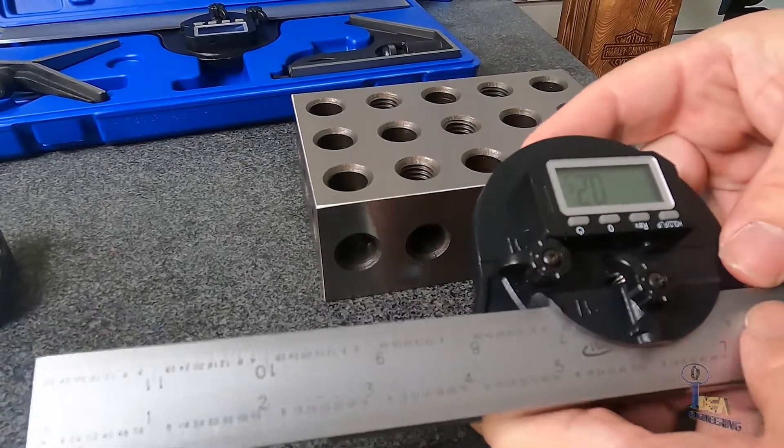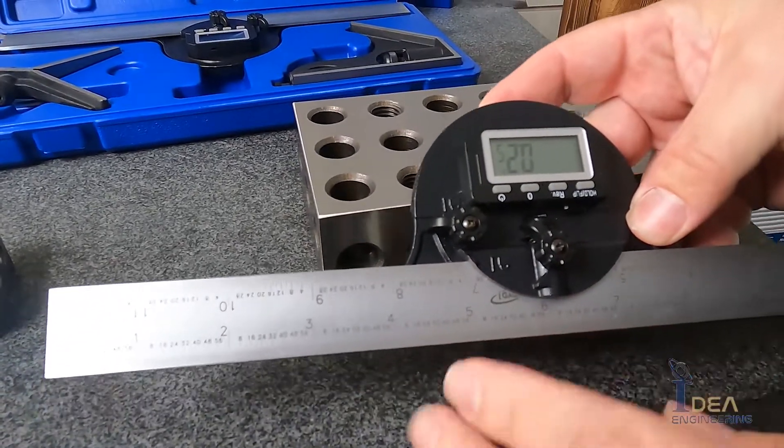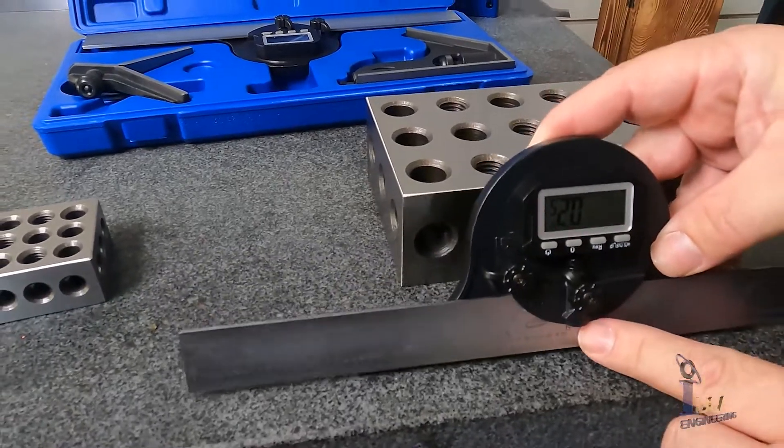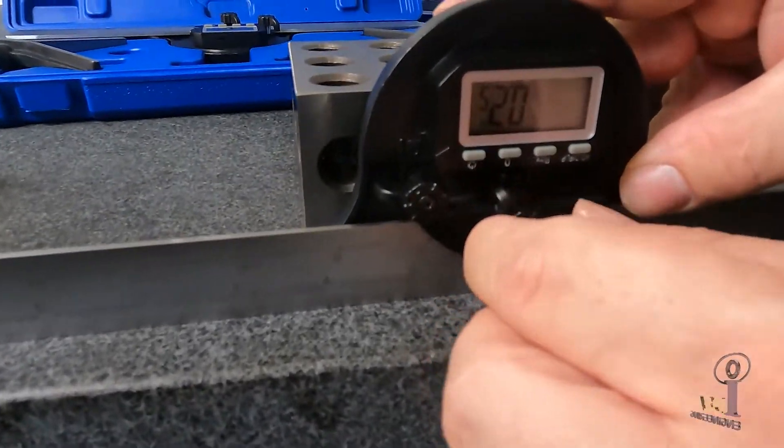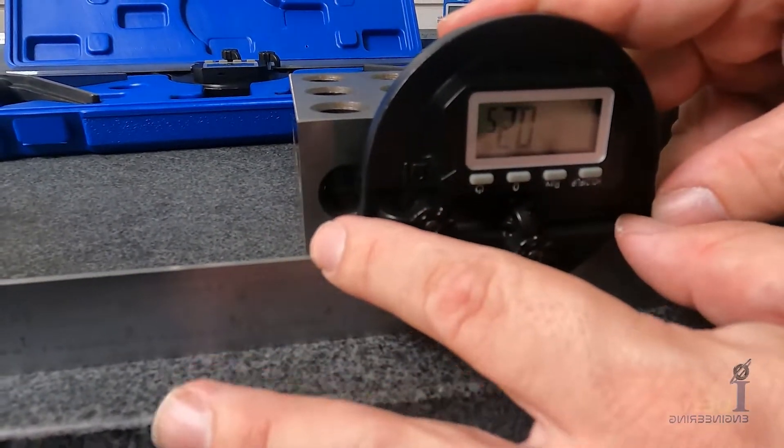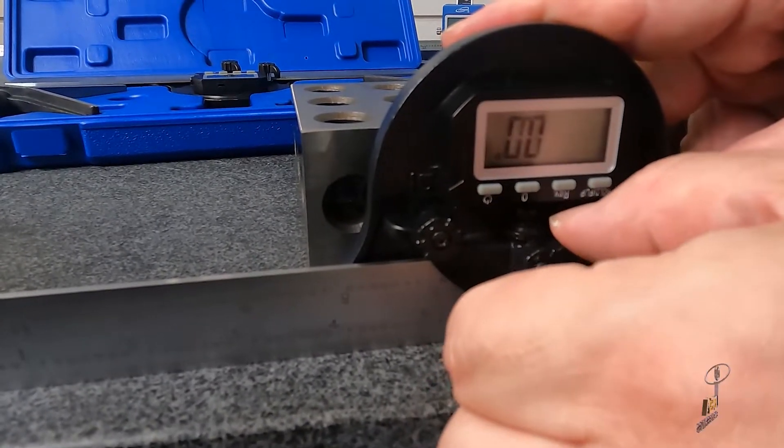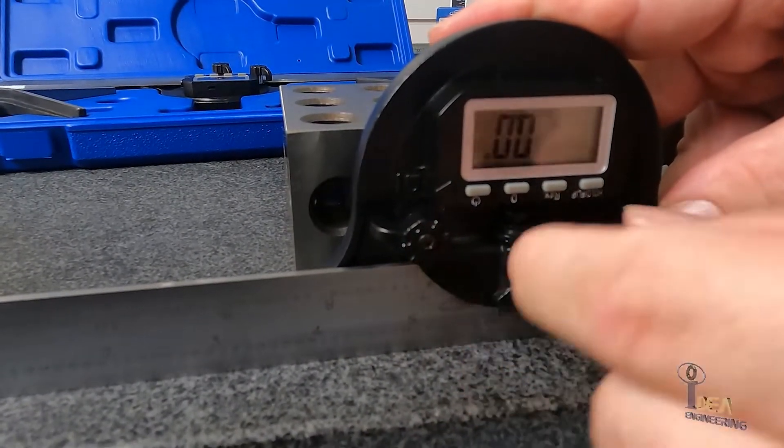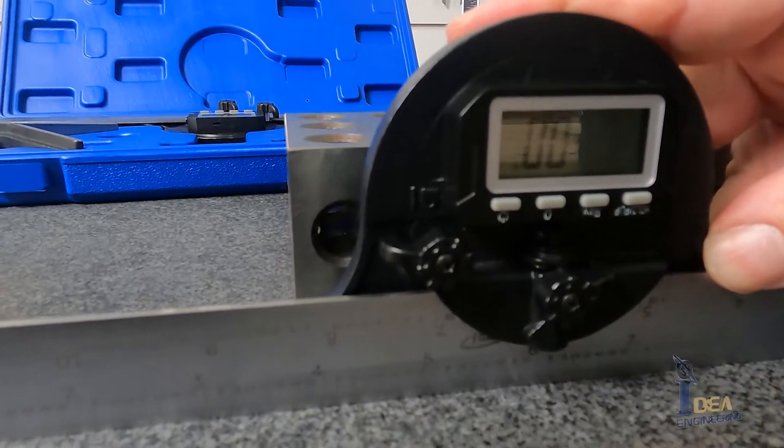Now let's go ahead and set this up to calibrate it. So we're going to take this surface here, set it down and then set this to flat. Lock it down and then you click there to zero it out.